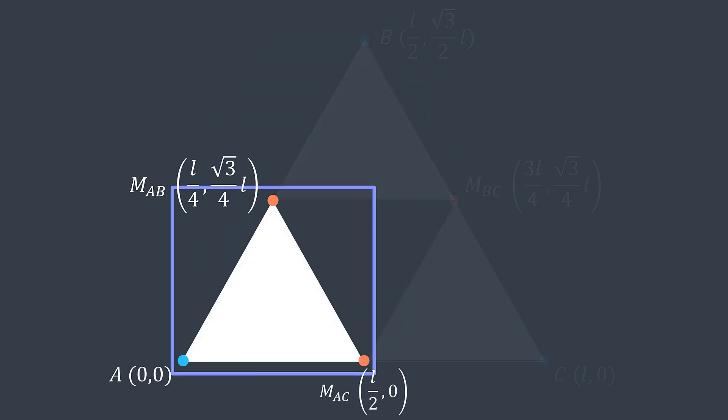For the left sub triangle, A remains A, B is in reality midpoint of AB, and C is midpoint of AC.